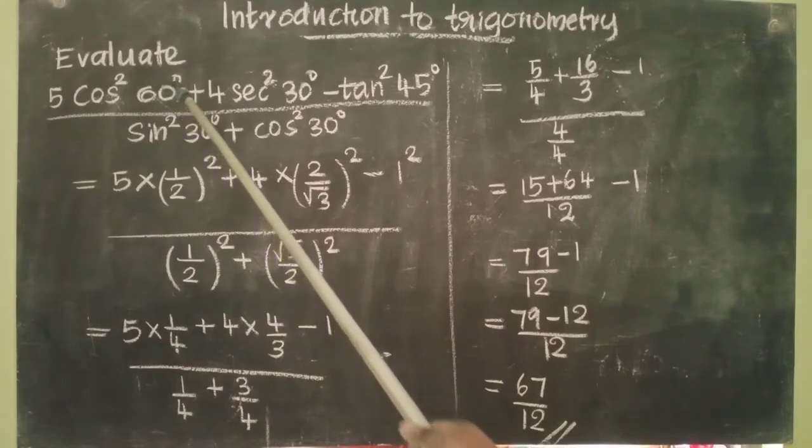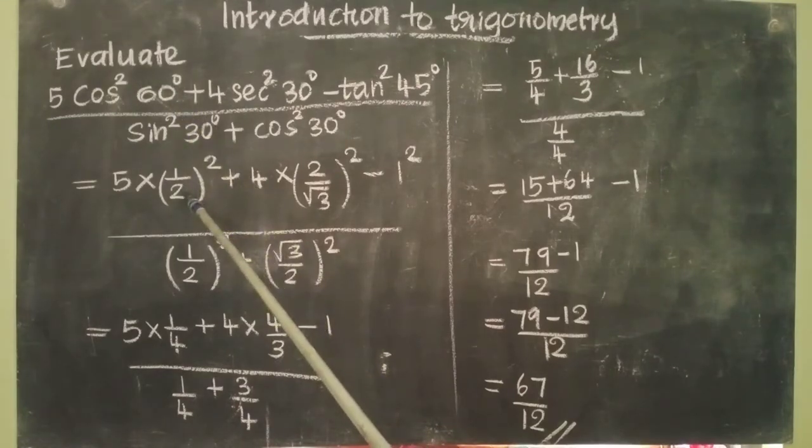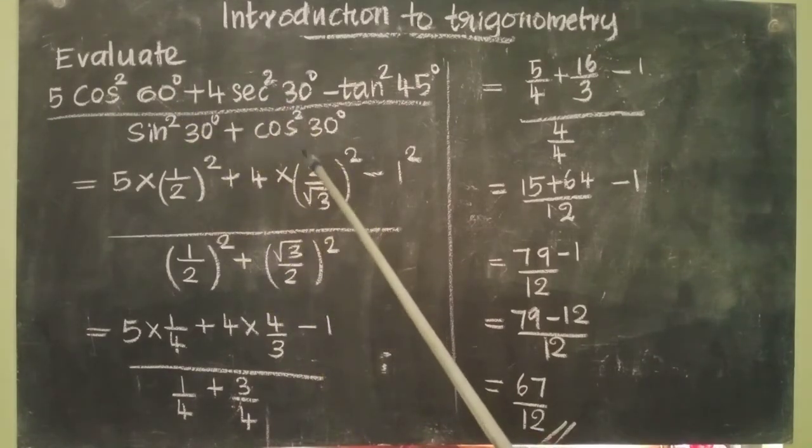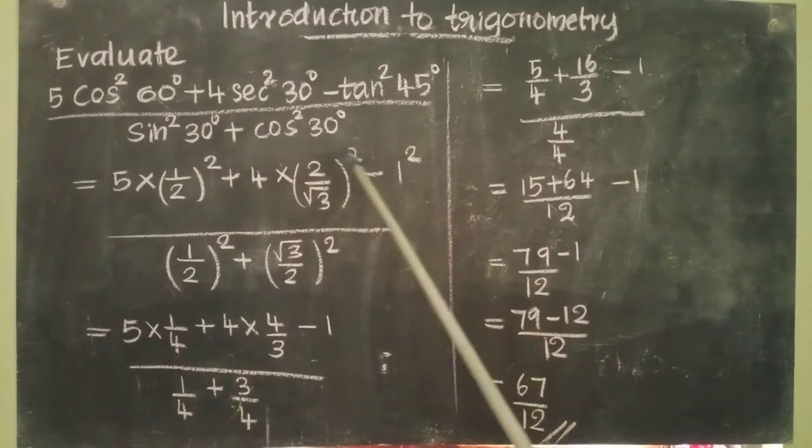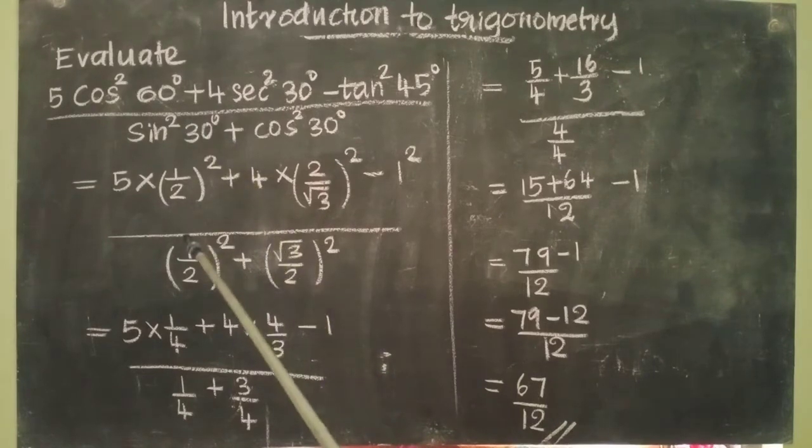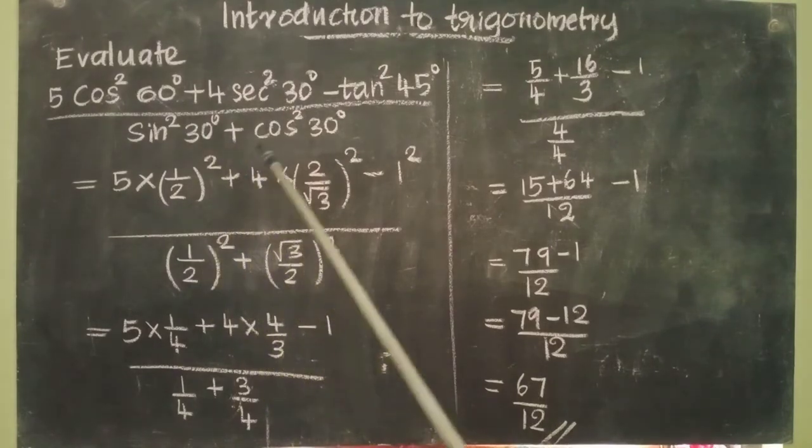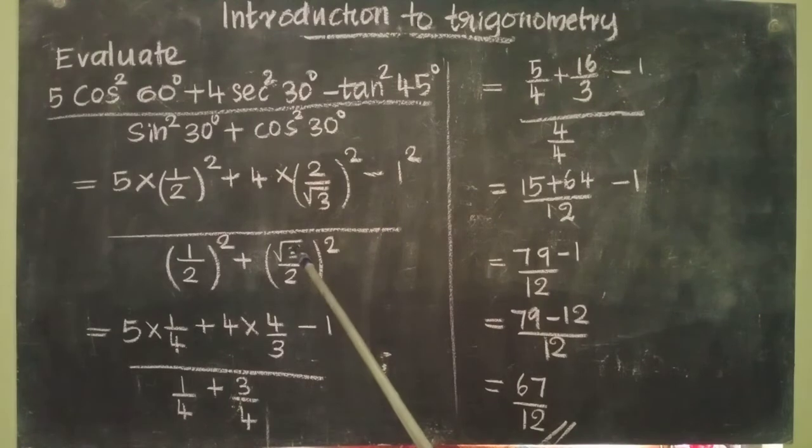We know cos 60° equals 1/2, sec 30° equals 2/√3, tan 45° equals 1, sin 30° equals 1/2, and cos 30° equals √3/2.